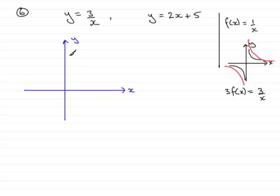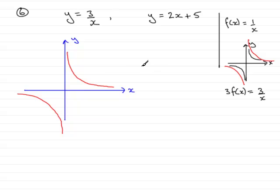So sketching this, we have a graph that comes down like this and tends towards the x-axis, and the same on the other side. That's our graph of y equals 3 over x, and it clearly doesn't cross the x or y-axis. I'll mark that in as y equals 3 over x.